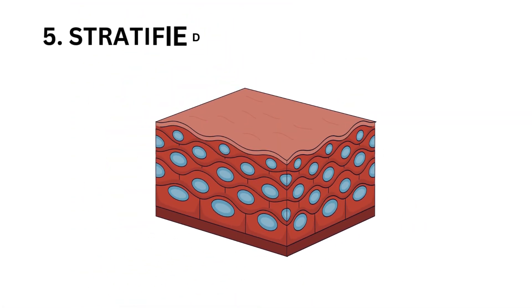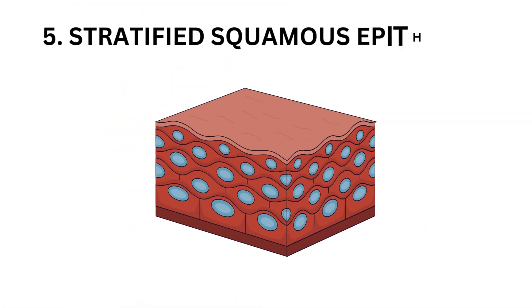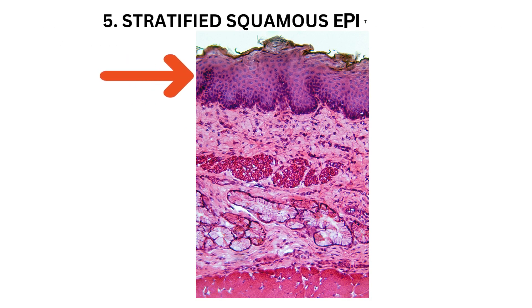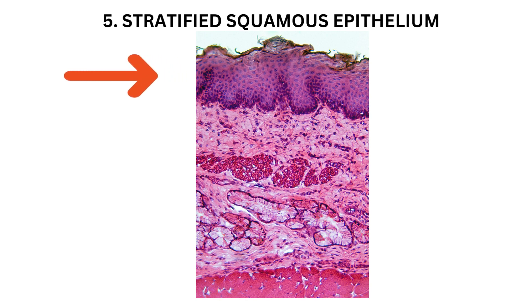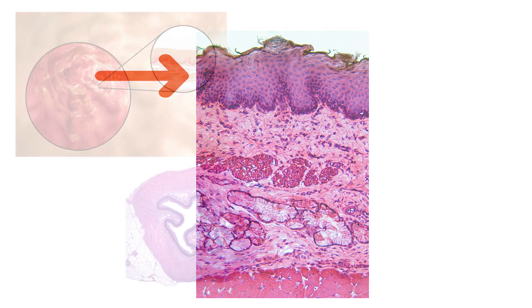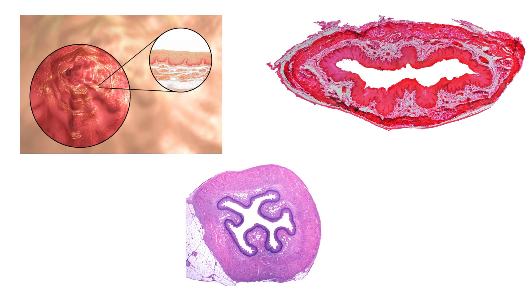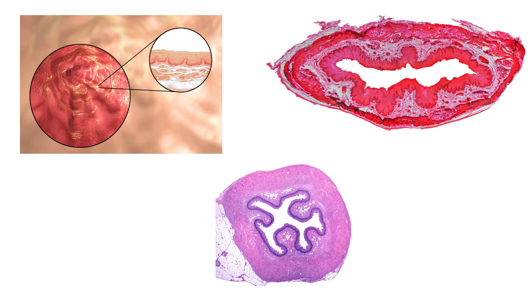Stratified squamous epithelium consists of multiple layers of flat cells; the outer layer is squamous. It forms the outer layer of the skin (epidermis) and lines the oral cavity, esophagus, and vagina.